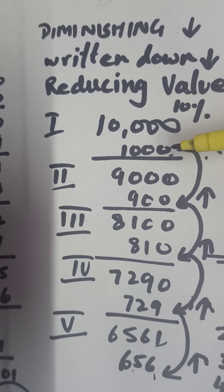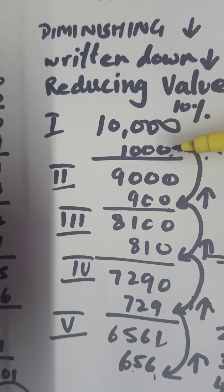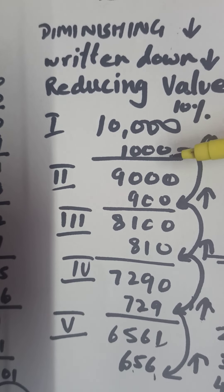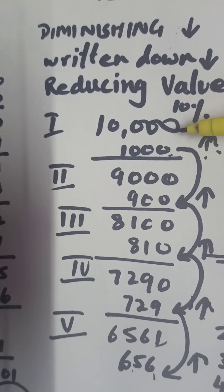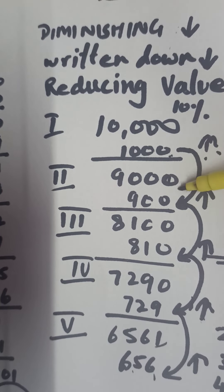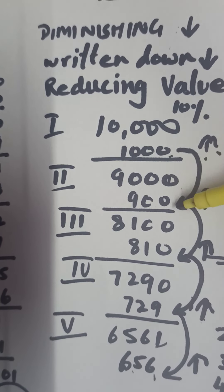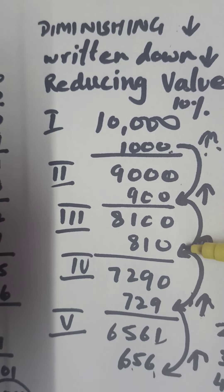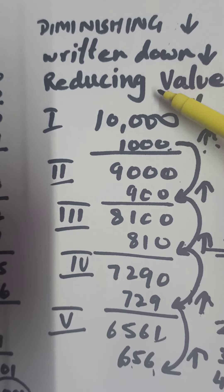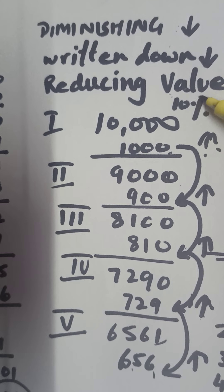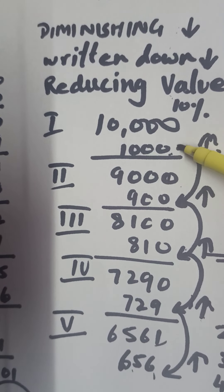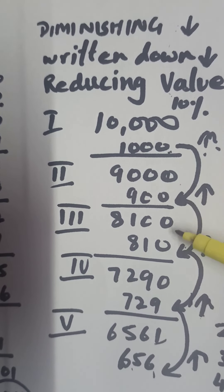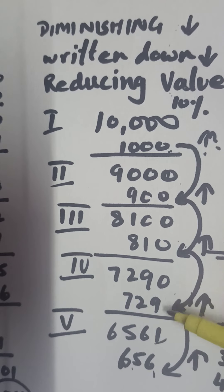Children, in this method, other than the original cost, this literally departs from the fixed installment method. With the book value, the depreciation also goes on reducing. That is why it is also called reducing balance method or reducing value method, because the value of depreciation is also reducing year by year.